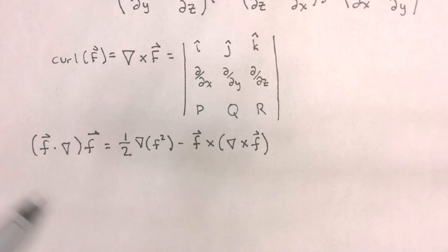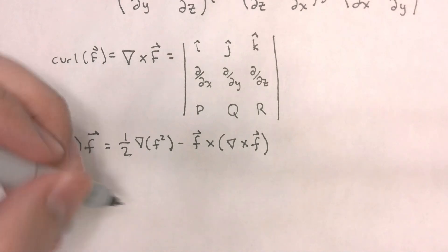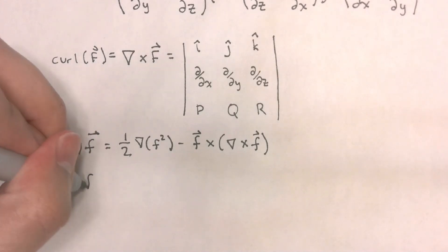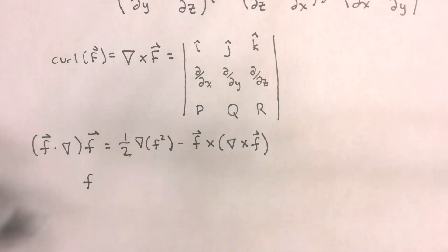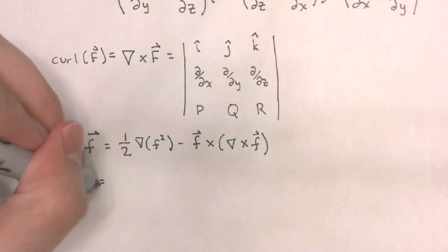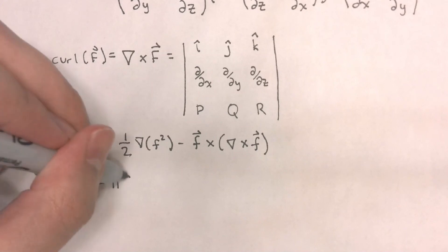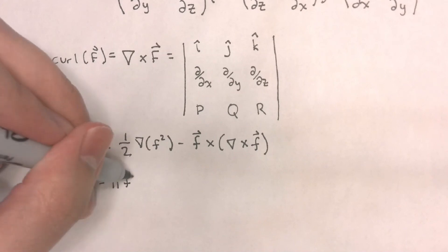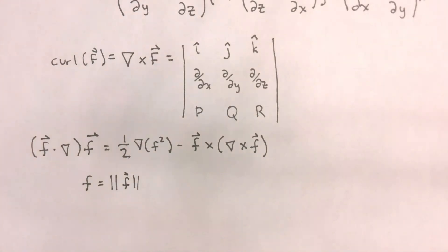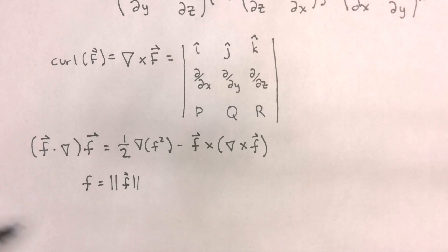Now, for this vector identity, let's keep in mind that f without the vector arrow is simply the magnitude of my vector. Let's keep this in mind because we're going to go back to it when we're deriving an equation in a future lesson.